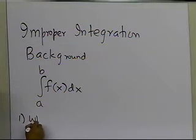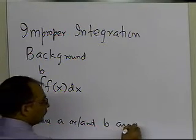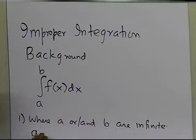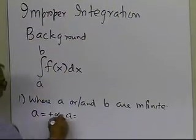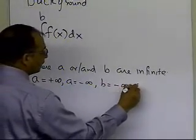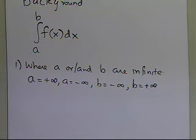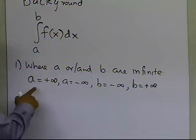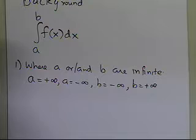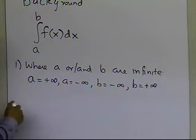One is where a or b are infinite. That means a can be plus infinity, a can be minus infinity, b can be minus infinity, and b can be plus infinity. So any of these combinations, or you don't necessarily have to have each a and b also having an infinite limit, one of them can be. So if a or b are infinite, then it's considered to be an improper integral.